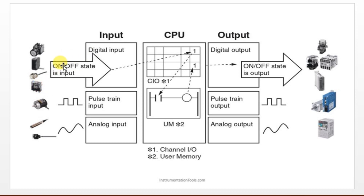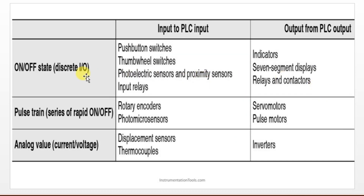The input module is the one which can collect all types of signals. If your project has only digital input, you can go for a digital input module. If you have analog input, you have to go for an analog input module. If you have pulse input, you should go for the pulse input module. Input modules are differentiated into three types — you can pick according to your application. The same applies for outputs.